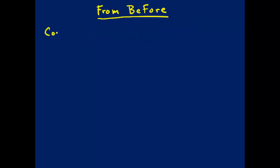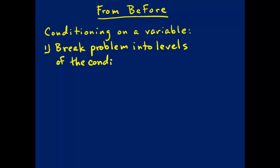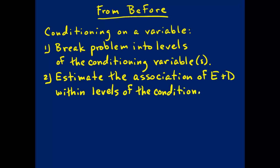As a reminder, previously we talked about conditioning on a variable, and you were asked to practice thinking about conditioning on a variable and to envision it fluently in your mind. To condition on a variable, you first break your problem into levels of the conditioning variables. If you have more than one conditioning variable, you break the problem down into levels of the joint distributions of those conditioning variables. Then you estimate the association between your exposure and your outcome variable within each of those levels.